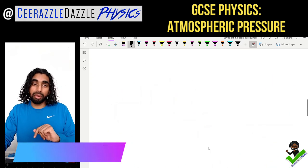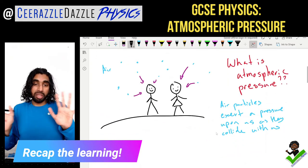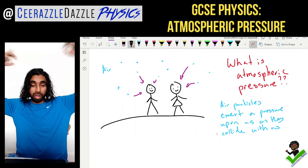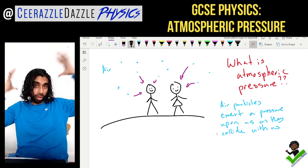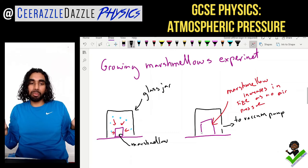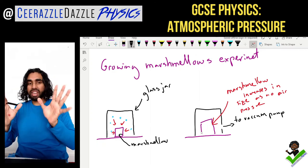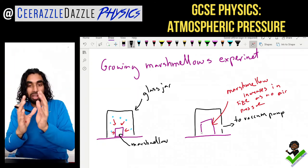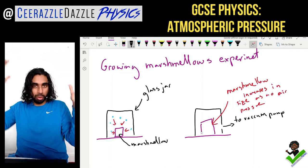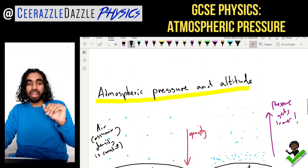Let's recap. Today's title was atmospheric pressure. We explained that all of us right now have pressure acting on us because the air particles are constantly bombarding us. Then we covered the growing marshmallows experiment — place a marshmallow in a glass jar, suction out all the air particles, and the marshmallow will grow because there is no more pressure acting upon it.